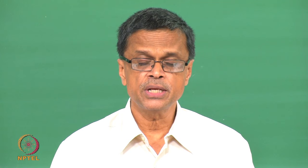Contributions towards equipment cost could be reactors, fermenters, then there could be cost of the downstream units like filtration units, isolation units — that could be membranes, liquid-liquid extraction units — then purifications could be different types of chromatographies or crystallizers and then dryers. In addition we also have to consider the utilities because no biochemical engineering manufacturing facility runs without cooling water, steam, hot oil, chilled water, gases and so on. All these contribute to the equipment cost.